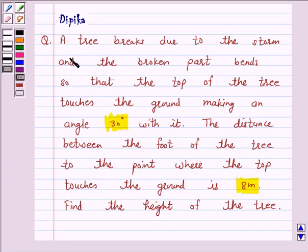Let's discuss the question. A tree breaks due to the storm and the broken part bends so that the top of the tree touches the ground making an angle 30 degrees with it. The distance between the foot of the tree to the point where the top touches the ground is 8 meters. Find the height of the tree.